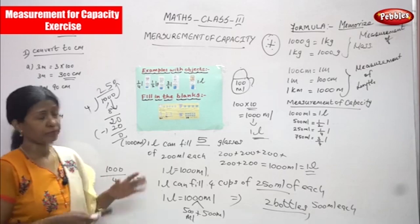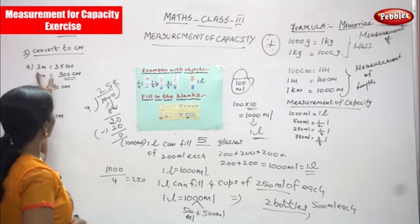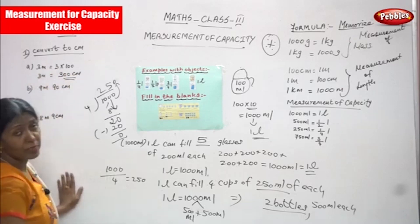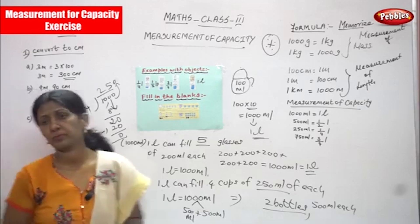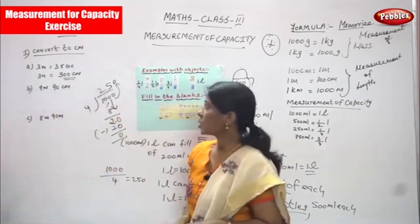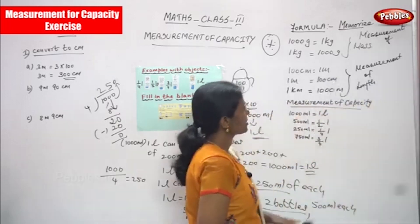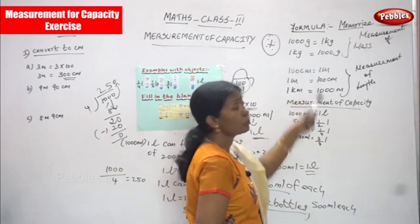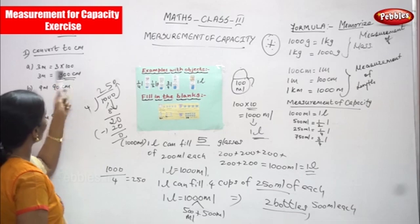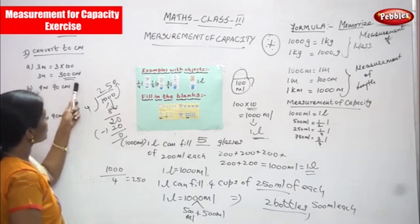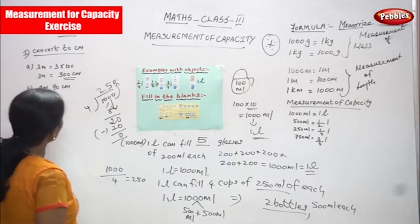Now we are going to convert the word — convert to centimetre. The first question: 3 m is equal to how many centimetres? 1 m is equal to 100 centimetre. This is the formula. So 3 m means 3 into 100 — you can get 300 centimetre.